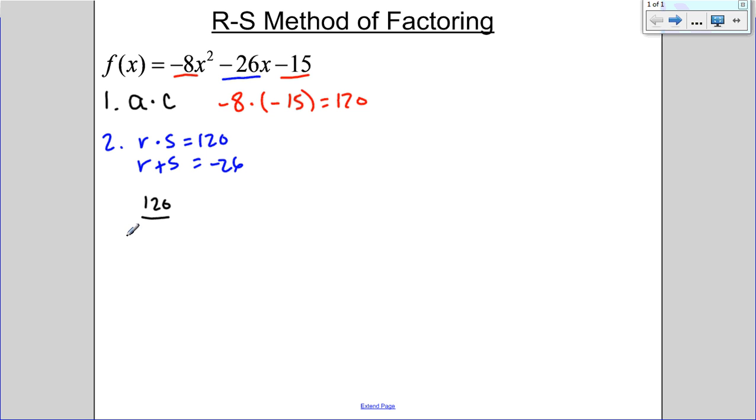In this case, they're both going to be positive or they're both going to be negative to multiply to a positive 120. So I just start looking at my differences. If I have a 1 and a 120, the difference is 119, 1 and 21, so that's not really going to help me.